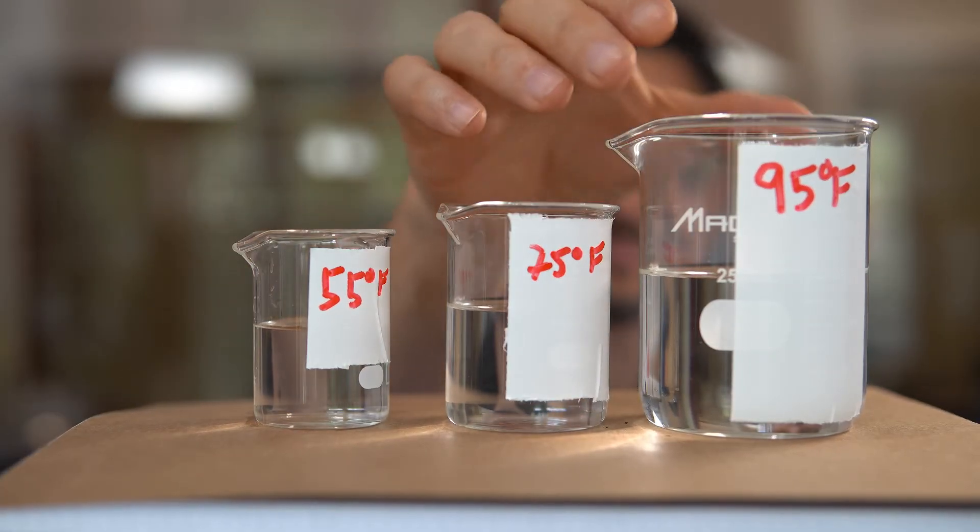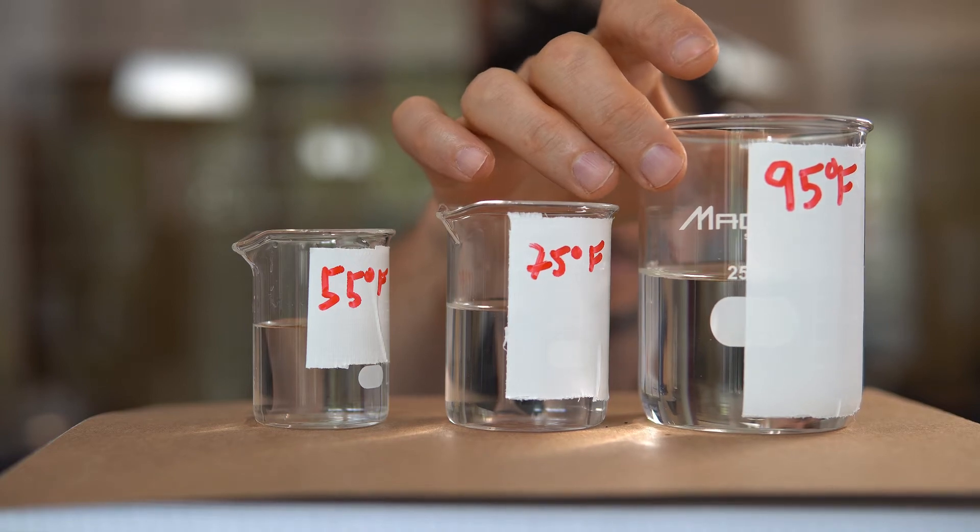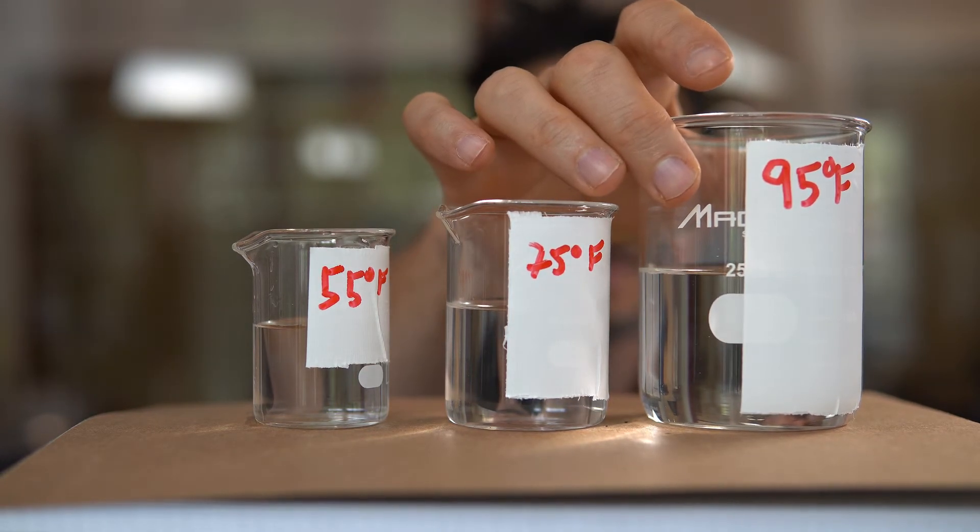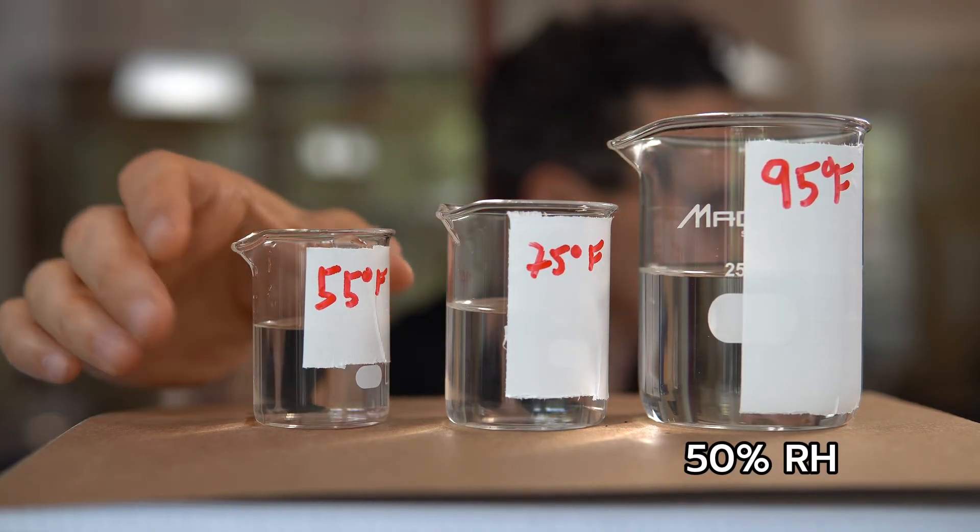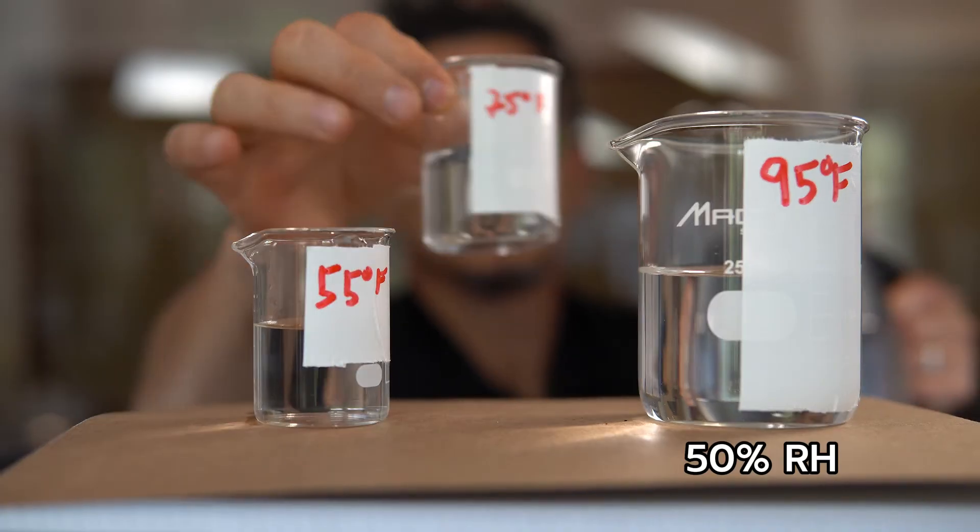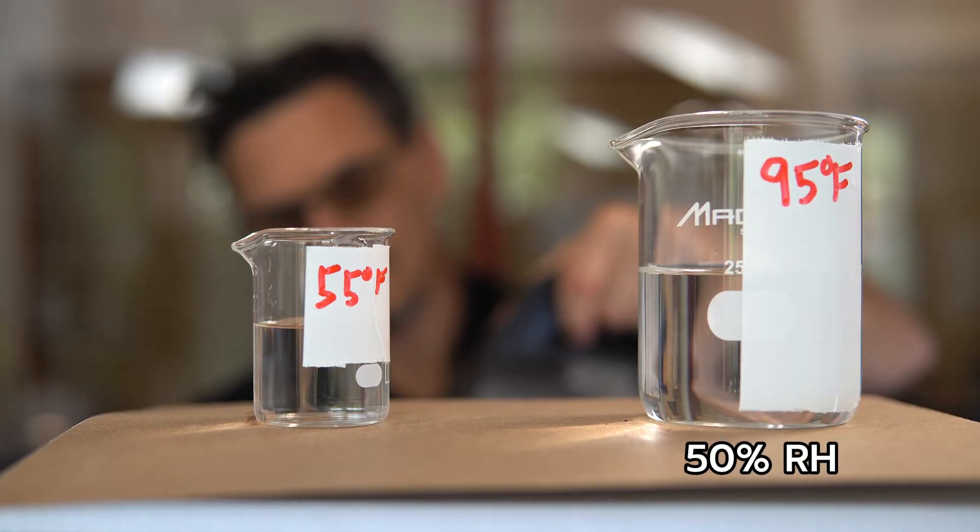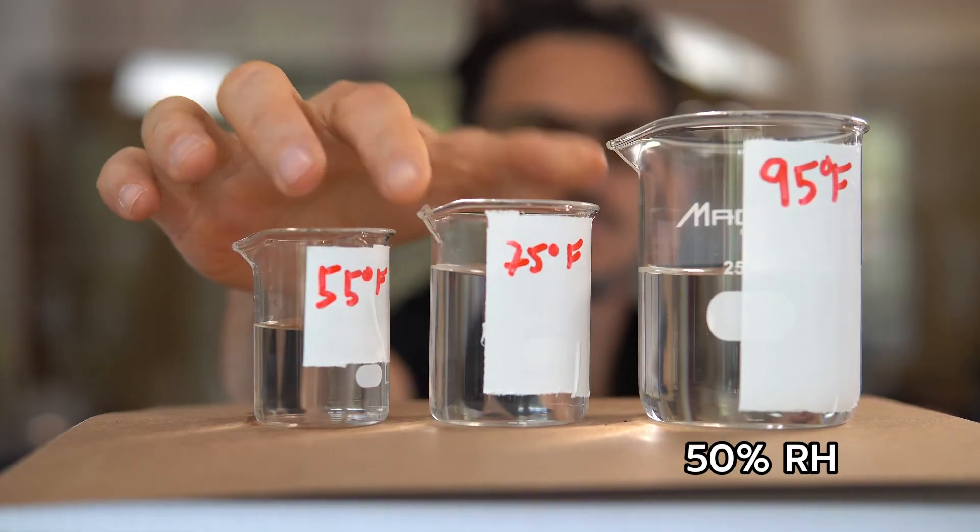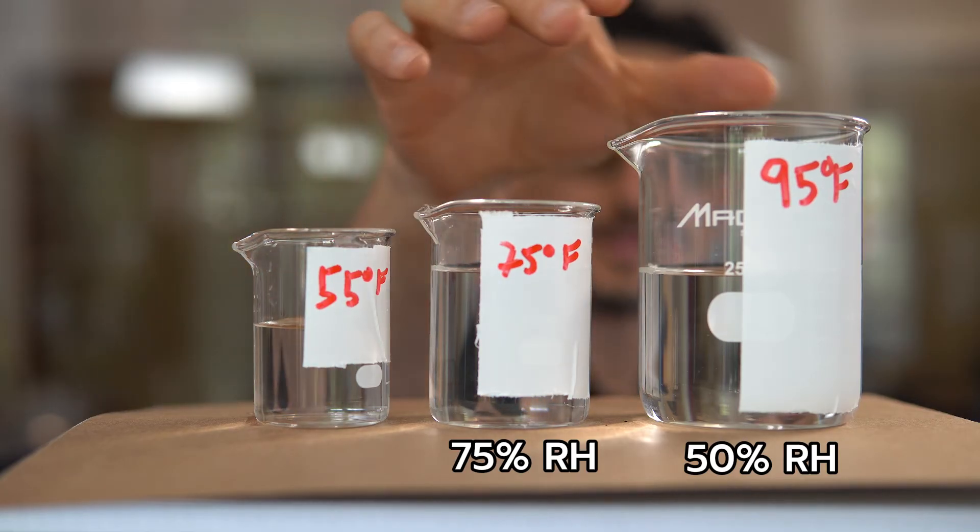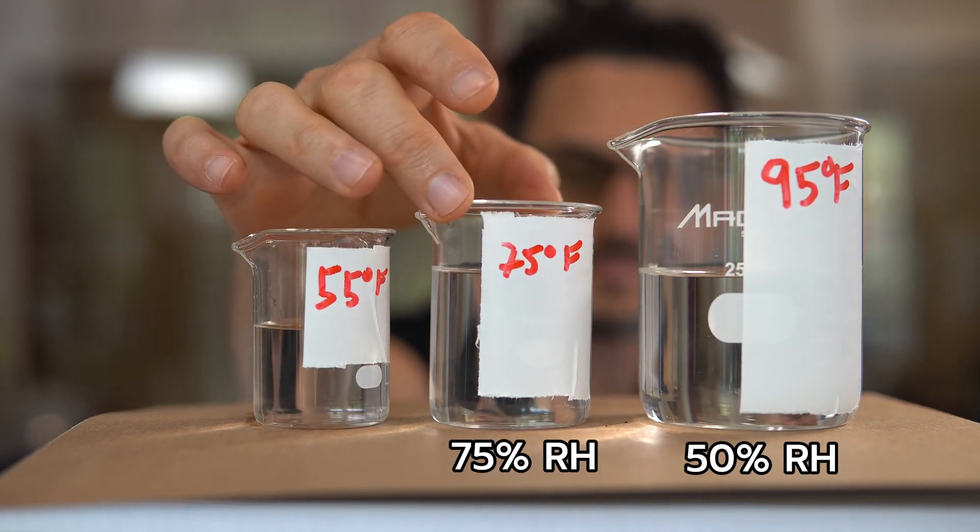Okay, so now sometimes you might be in a very hot climate. Let's say this condition here, 95, 50% RH, and let's say you're at 75 degrees and 70% RH. I'm gonna simulate that by just pouring a little bit more water in here. Maybe that's 75% RH or something like that. Okay, 95, 50%, 75, 75%.